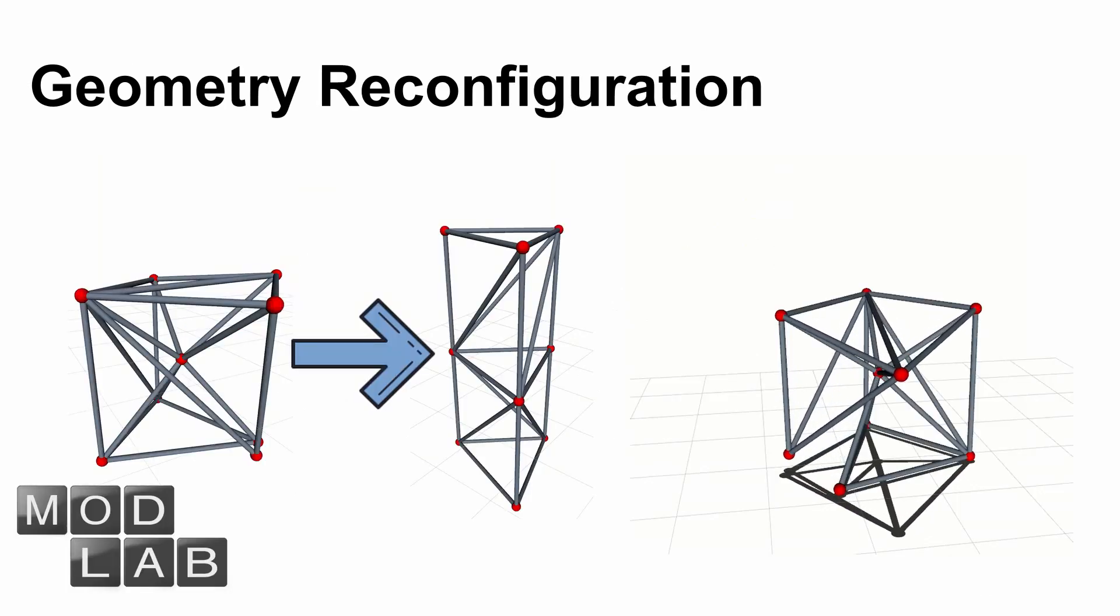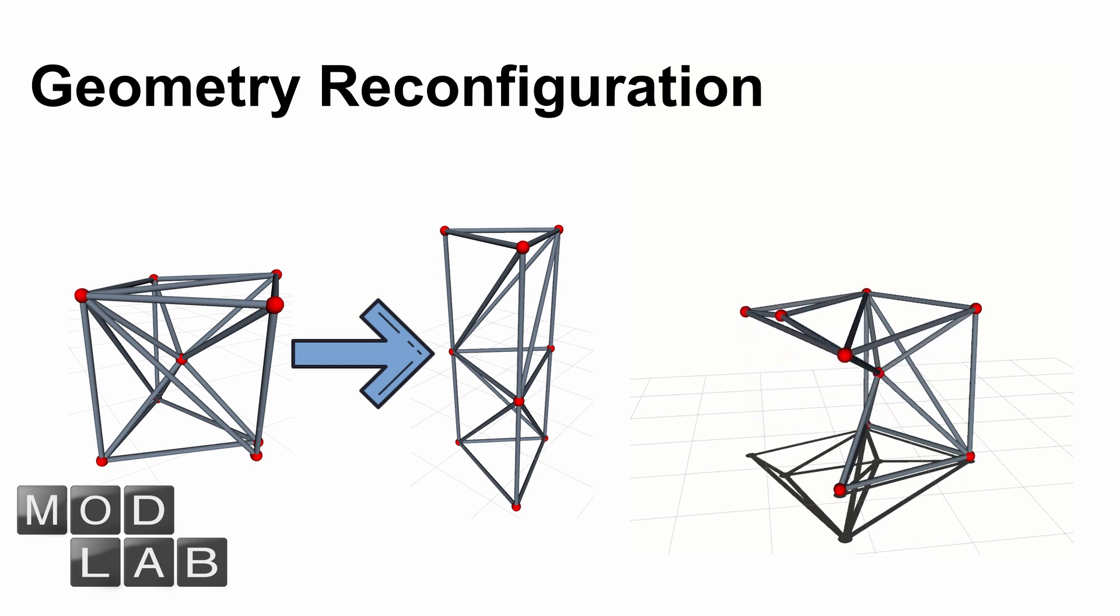With this framework, we can do the geometry reconfiguration planning very fast. Here we show a scenario that is to reconfigure a truss in cubic shape into a tower.